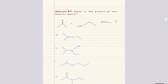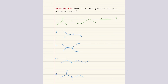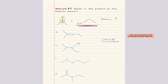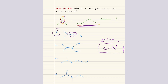Problem four asks what is the product of the reaction below. In this reaction, we start with a ketone and a primary amine as reactants. When aldehydes or ketones react with ammonia or nitrogen-based derivatives, they undergo a condensation reaction. The mechanism involves nucleophilic attack of the amine on the electrophilic carbonyl carbon, followed by elimination of water, resulting in a carbon-nitrogen double bond — an imine. The only answer that matches this is A, where the ketone's carbonyl has been replaced with a C=N double bond.